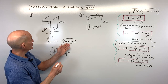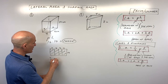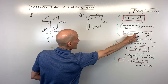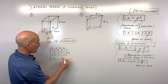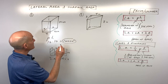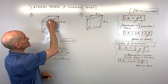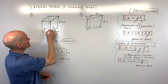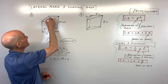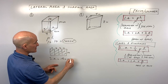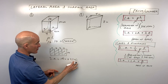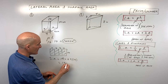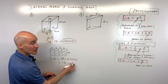To find the surface area, we take the lateral area of 160 and add the area of the base times two, since we have a top and a bottom. The base is a square: four times four is 16, so two times 16 is 32. Adding that to 160 gives us 192 centimeters squared.